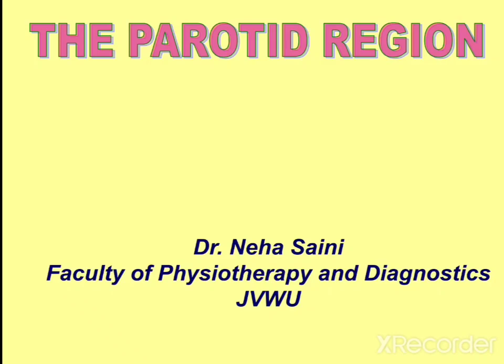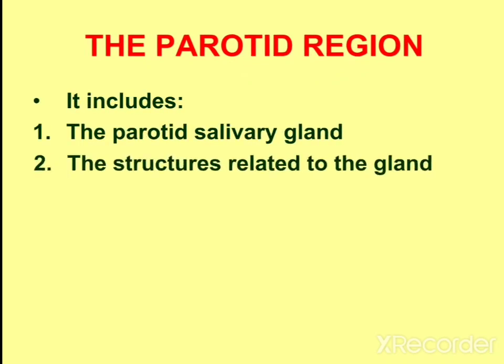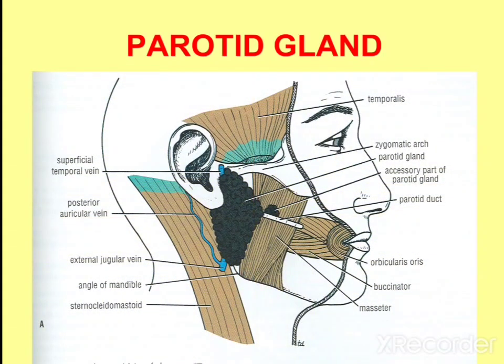Namaste, myself Dr. Neha Saini from Physiotherapy and Diagnostics, Jyoti Vidya Peeth Women's University. Here I am going to tell you about the anatomy of the parotid region and the parotid gland. The parotid region includes the parotid salivary gland and the structures related to this gland. Parotid means surrounding the ear or close to the ear, and here we find the largest salivary gland, that is the parotid gland.